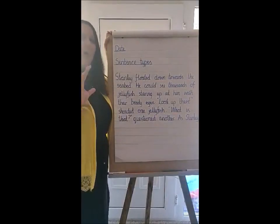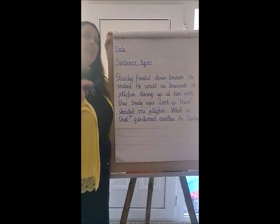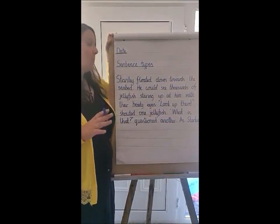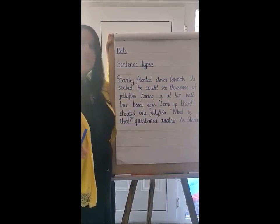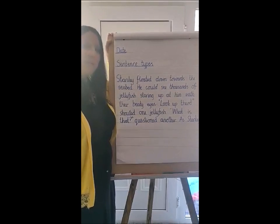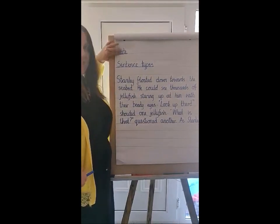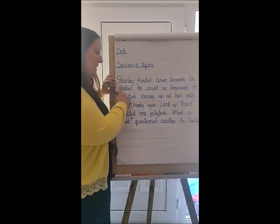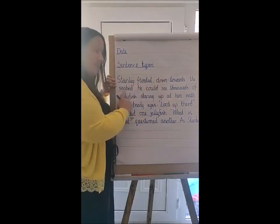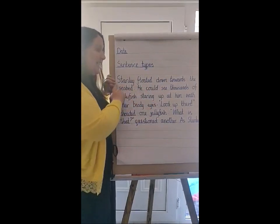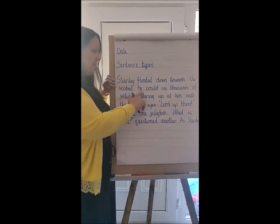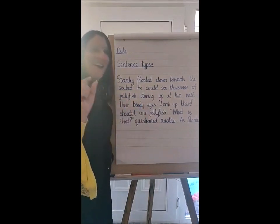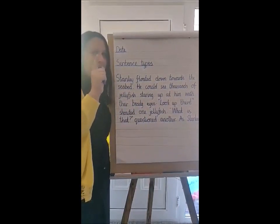Now we're going to use all of those in a piece of narrative writing about Stanley falling into the sea, floating down to the bottom, and all the jellyfish spying him for the first time. Don't forget — date and title. I've already begun: 'Stanley floated down towards the seabed.' That's a statement — I'm telling you what's happening. 'He could see thousands of jellyfish staring up at him with their beady eyes.' I like that — not just eyes, but those little beady eyes that watch you everywhere you go.